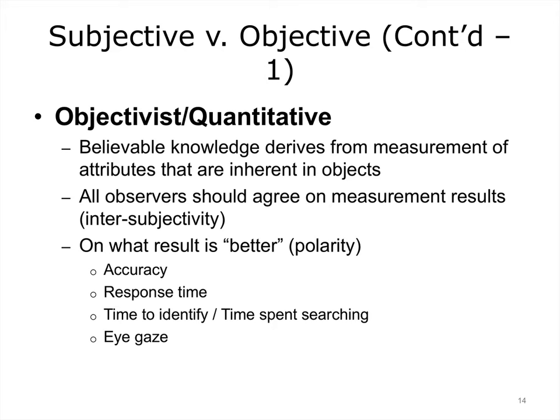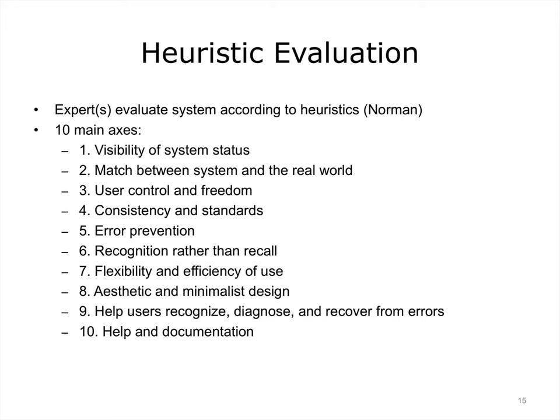Creating a good evaluation plan is key to understanding usability problems. Heuristic evaluation involves having a trained expert examine a system by using it, often with a specific scenario that reflects the things a typical user needs to do, and noting how it rates on Norman's 10 usability heuristics. They then report to the programmers, vendor, and administrators of the project on what problems were discovered so that they can be fixed.